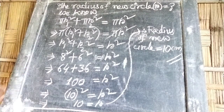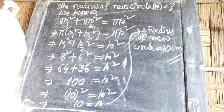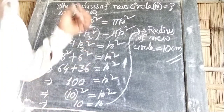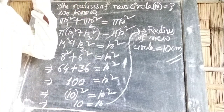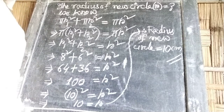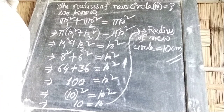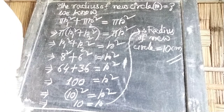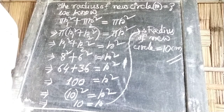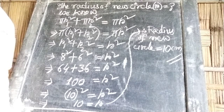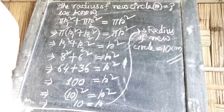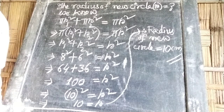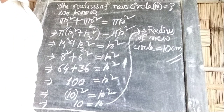Therefore, the radius of the new circle equals 10 cm. That question is completed. Question 4: The diameter of each wheel of a car is 60 cm. When the velocity of the car is 66 km per hour, how many times does the wheel rotate in 10 minutes?